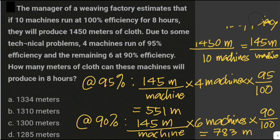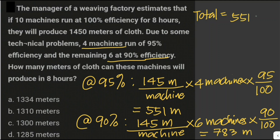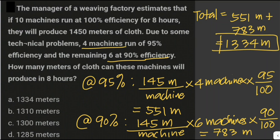To find the total length of cloth these machines will produce in 8 hours, we add the length produced by 4 machines at 95% efficiency and the length produced by 6 machines at 90% efficiency. That is 551 meters plus 783 meters, which equals 1,334 meters of cloth in all.